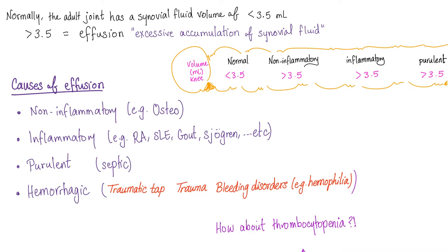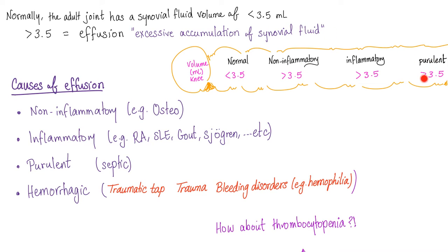Normally the adult joint has a synovial fluid volume of less than 3.5 milliliters. If it's more than 3.5, this is called effusion — defined as excessive accumulation of synovial fluid. Normal is less than 3.5. Non-inflammatory effusion is more than 3.5. Inflammatory effusion is more than 3.5 mLs.